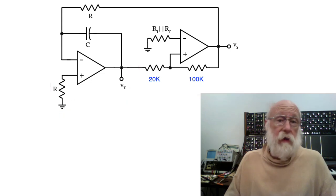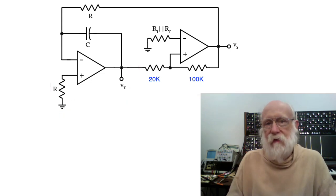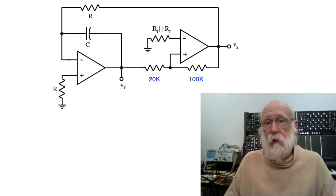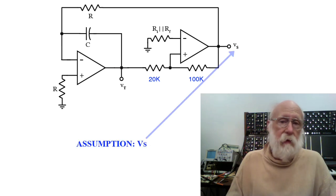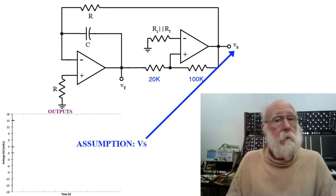In order to figure out what this circuit is doing, you sort of have to make an assumption about the state of the circuit, verify that that state is actually possible, and then work from there. So we're going to assume that V sub S, the output of the Schmidt trigger, is plus 15.